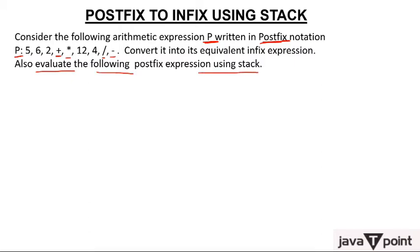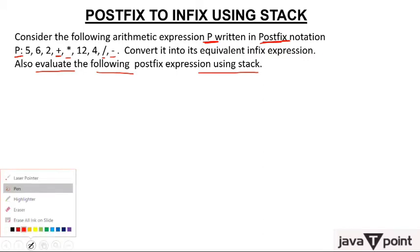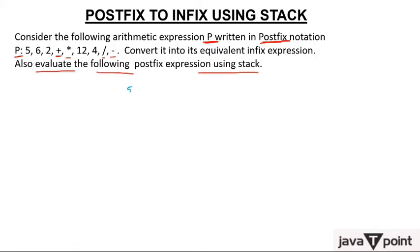To start, write out the postfix expression: 5, 6, 2, +, *, 12, 4, /, −. You scan from left to right, and the moment you find an operator, take that operator out and put it in the middle of the two preceding operands. So for the + operator, put it between 6 and 2, giving (6 + 2).